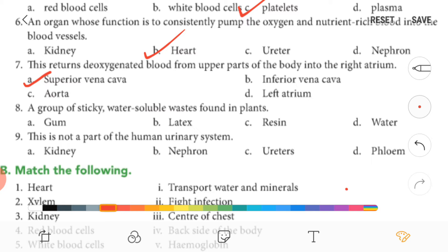Now eighth one, group of sticky water-soluble waste found in plants—it is called gum.